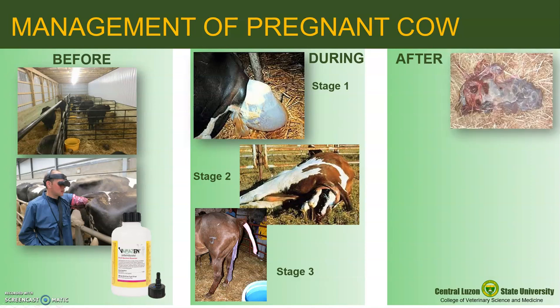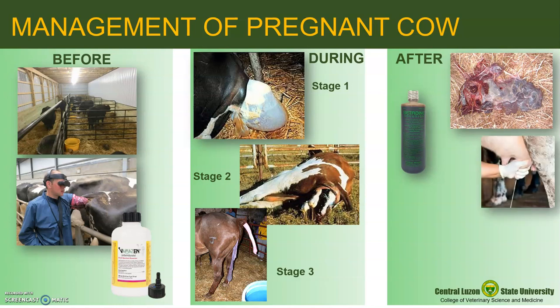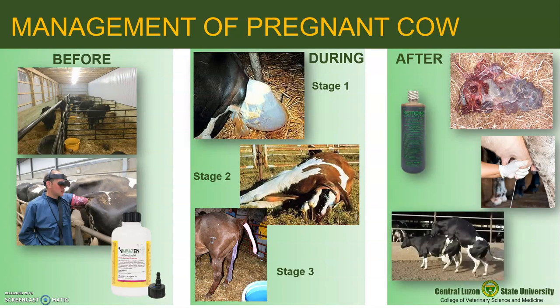After parturition, do not allow the cow to eat the placental membrane. Flush the uterus with 10% betadine solution — this should be done after correction of retained placenta if there is any. Check if the dam has milk for the calf. At all times, provide the newly calved cow free access to feed and water to regain its strength. Also, observe the occurrence of postpartum estrus starting from 15 to 45 days after calving.